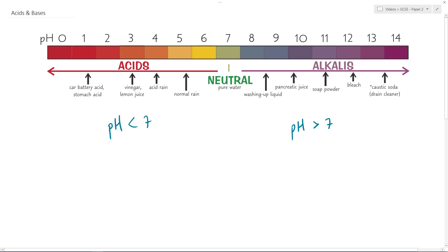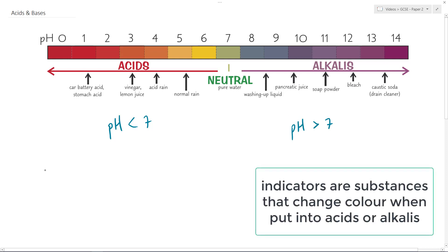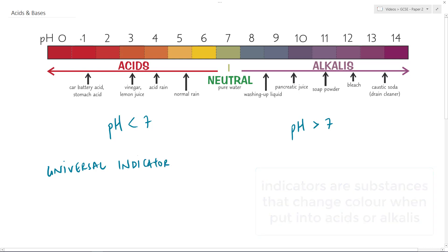This coloring comes essentially from the use of an indicator, specifically universal indicator. This is a substance which when added to an acid will give us a color depending on the pH that will range from red through to orange to a yellowy, slightly greenish color, but not a true green because that would be neutral.